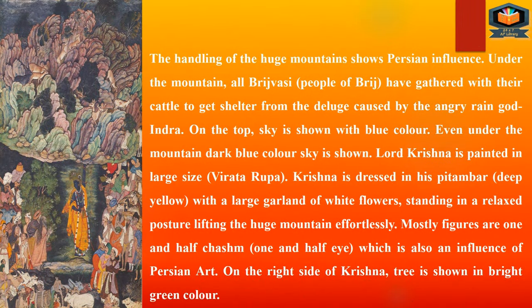The handling of the huge mountain shows Persian influence. Under the mountain, all Brijvasi people of Brij have gathered with their cattle to get shelter from the deluge caused by the angry rain god Indra.